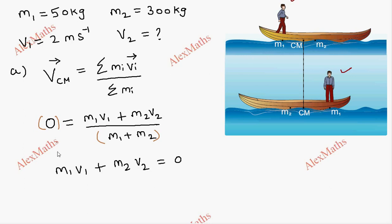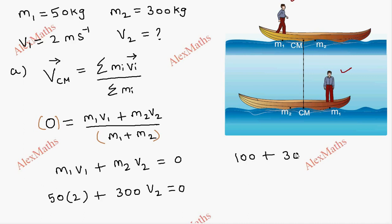Now substituting values: m1 is 50 kg with v1 = 2 m/s, and m2 = 300 kg with velocity v2. So 50 × 2 plus 300 × v2 equals zero, giving us 100 + 300*v2 = 0.